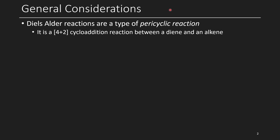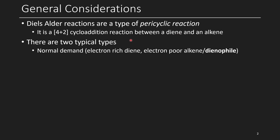The Diels-Alder reaction is a type of reaction known as a pericyclic reaction. It involves a 4+2 cycloaddition between a diene and an alkene, or some other sort of dienophile. There are two typical types of Diels-Alder reactions. The first type is the normal demand Diels-Alder, which involves an electron-rich diene as well as an electron-poor alkene or other sort of dienophile. One example is shown here where we have an electron-donating group on the diene and an electron-deficient alkene.